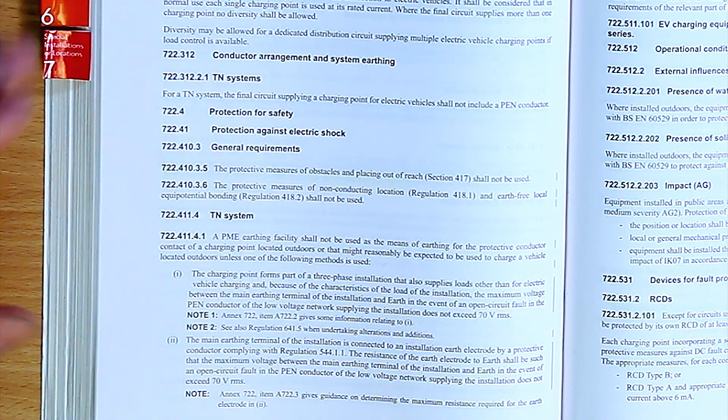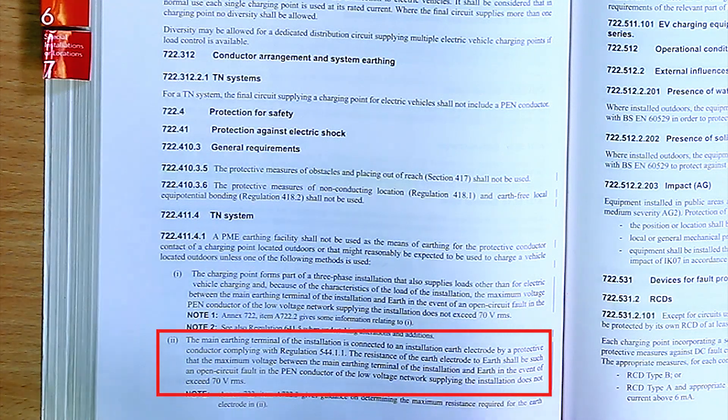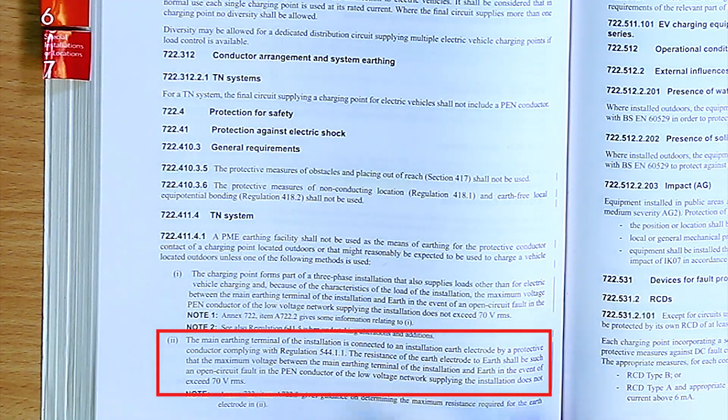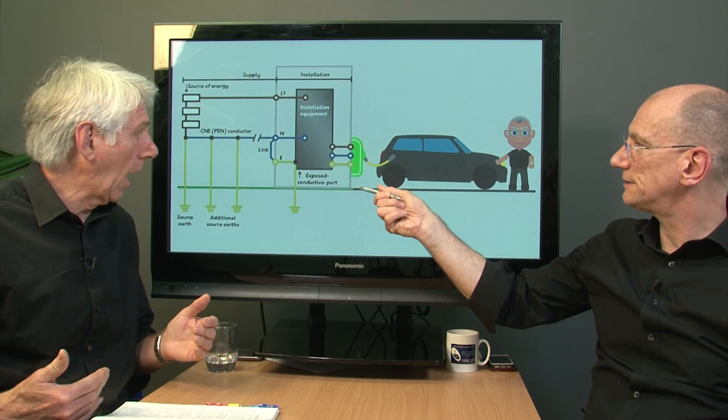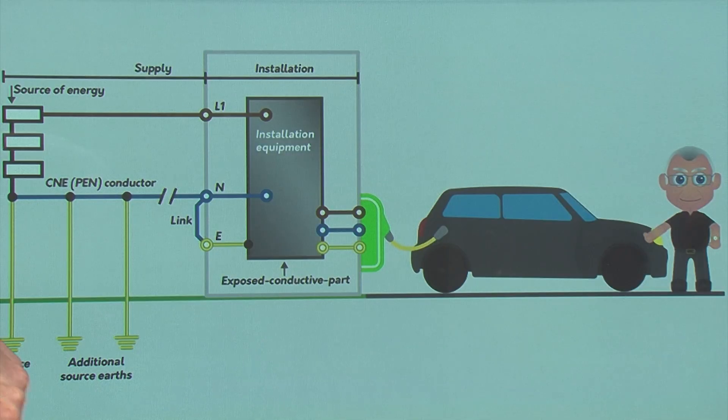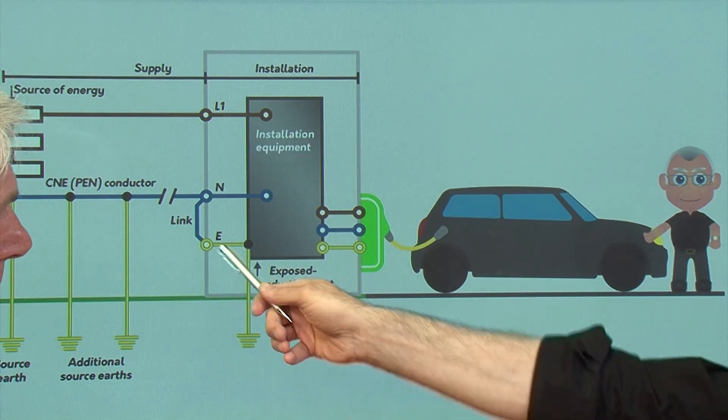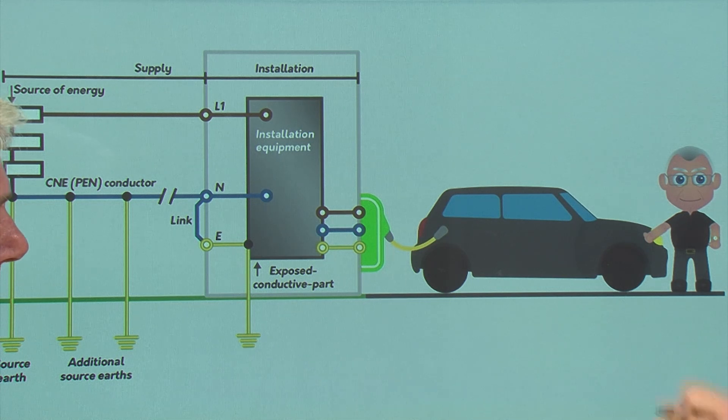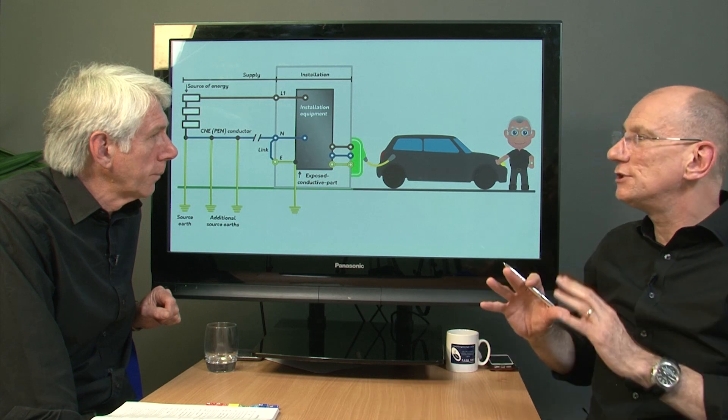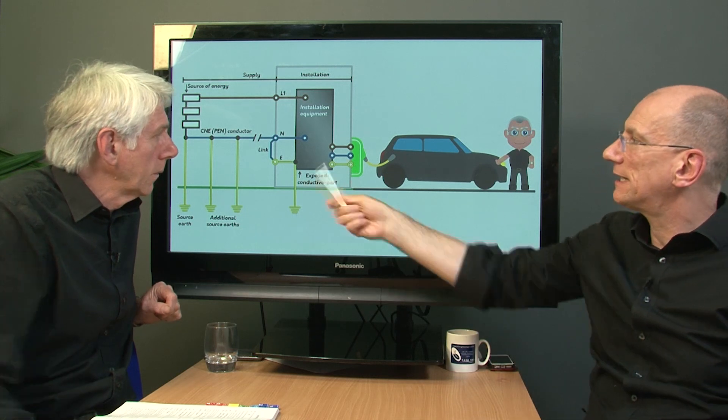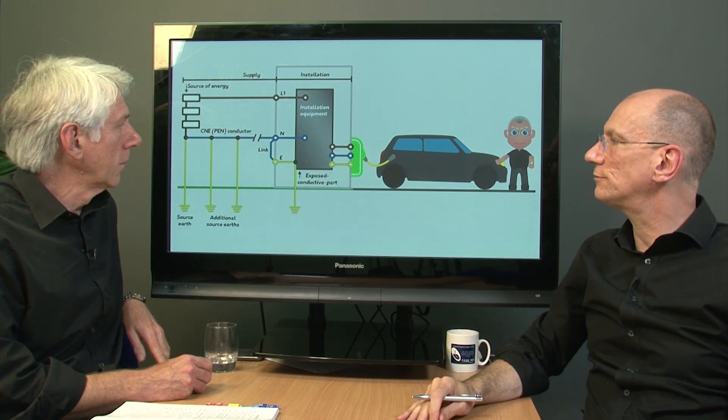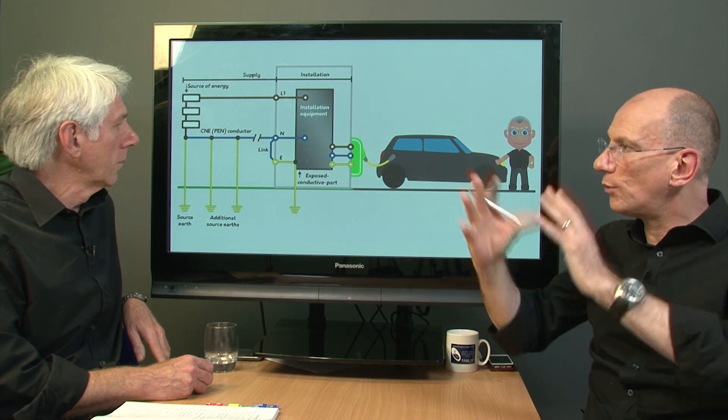Number two then. The main earthing terminal of the installation is connected to an installation of earth electrode by a protective conductor. And it goes on to detail. Just like this. But like that. So let me just flip between the two. So basically, I mean, it's shown there. It's just for convenience there. But it's the main earthing terminal. This is the supplementary earth electrode. This is not TT. This is basically stating that if you end up with a broken neutral, there is an alternative path.